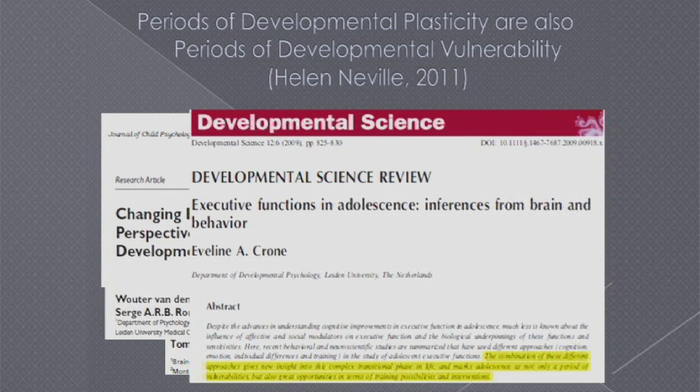This is not anything new. Evelyn Crone has been saying this for a long time — she talks about the pre-adolescent to adolescent period as an absolutely critical window of opportunity for interventions for neurodevelopmental disorders. Until we start to realize that this period is as important as the preschool period, we won't have the types of outcomes that children are capable of by the time they become adults.